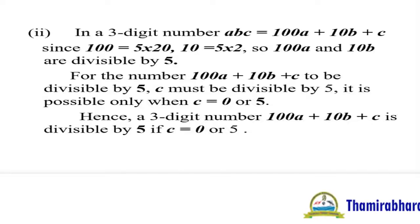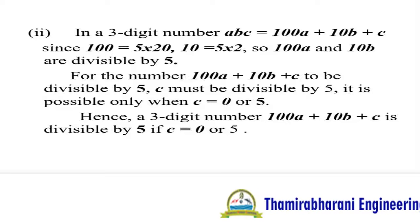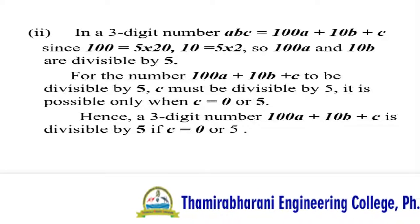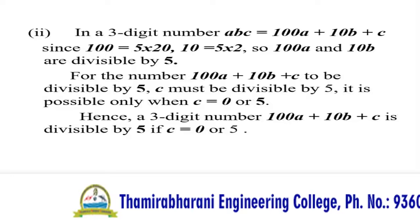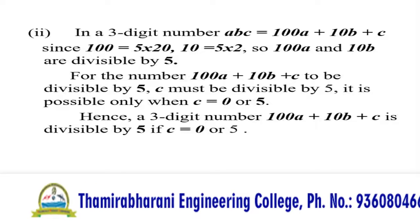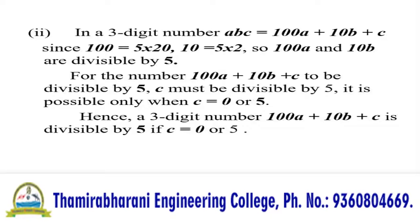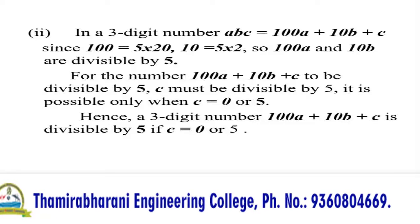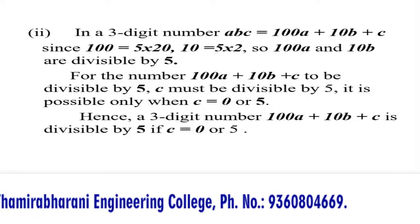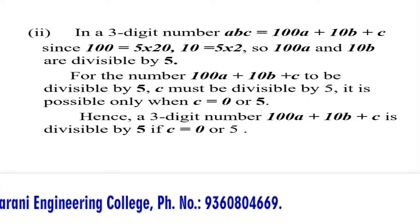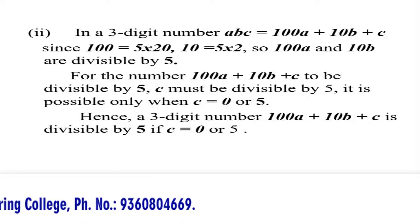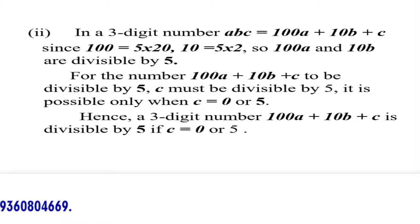Therefore, the number 100A plus 10B plus C is divisible by 5 if and only if C equals 0 or C equals 5.